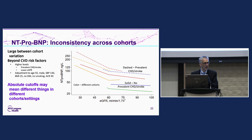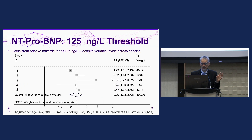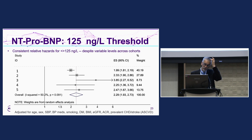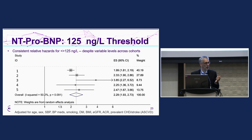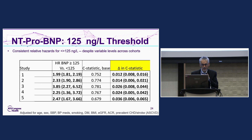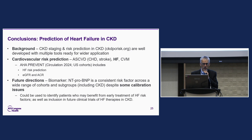We know what makes NT-proBNP levels higher. What's interesting is: what if you chose a cutoff of 125, based on the literature? The relative hazard turns out to be about 2.29 across all five cohorts — a little more in some, a little less in others. This incremental use, when needed, may actually work. The delta-C statistic for just the cutoff is about 0.02, which is not small. I'd love to hear from the group how, when, and where this should be applied.